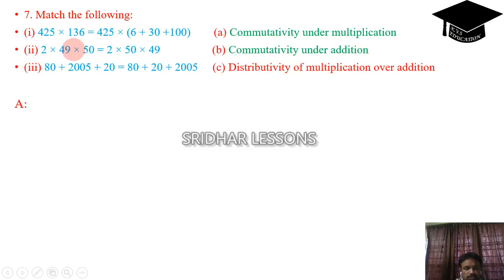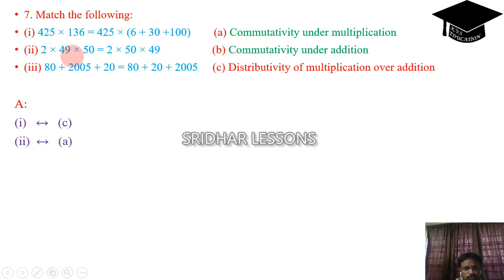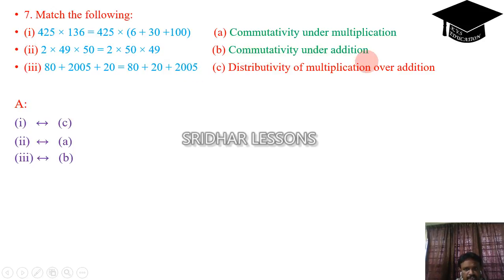Match the following. Students observe carefully. 425 into 36 equals 425 into (6 plus 30) — this is distributivity of multiplication over addition. 2 into 49 into 50 equals 2 into 50 into 49 — this is commutativity under multiplication. And 80 plus 2005 plus 20 equals 80 plus 20 plus 2005 — that is commutativity under addition.